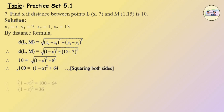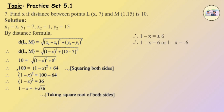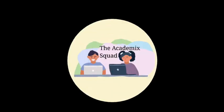Therefore 100 is equal to (1 minus x) square plus 64, squaring on both sides. Therefore (1 minus x) the whole square is equal to 100 minus 64. Therefore (1 minus x) square is equal to 36. Therefore 1 minus x is equal to plus minus root 36, taking square root on both sides, which gives plus minus 6. Therefore 1 minus x is equal to 6 or 1 minus x is equal to minus 6. Therefore x is equal to minus 5 or x is equal to 7. Therefore the value of x is minus 5 or 7. Thank you for watching the Academic Squad.